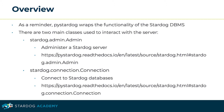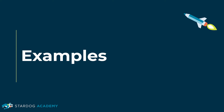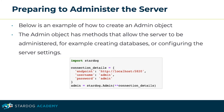This concludes the section on getting started with Python. This section is about examples. Below is an example of how to create an admin object. The admin object has methods that allow the server to be administered — for example, creating databases or configuring the server settings.